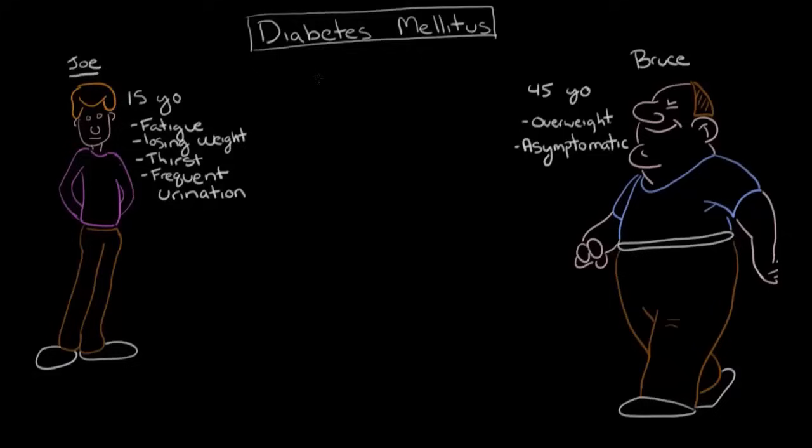Say both Joe and Bruce are seeing the same family practice doctor. For Joe, the doctor is worried about this thirst and urination and the losing weight, so he checks Joe's blood sugar. Similarly with Bruce, even though he doesn't have any symptoms, the doctor recommends routine screening that would include checking his blood sugar. It turns out that both Joe and Bruce have very high blood sugar. They have hyperglycemia, and they're both diagnosed with diabetes. But how can such different situations be caused by the same disease?